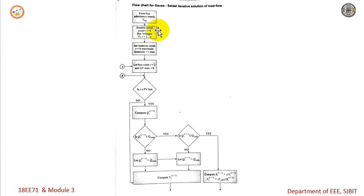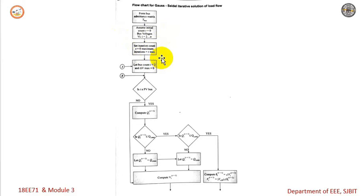Then we need to assume the initial conditions. Set the iteration count r equal to 0 for the 0th iteration. Assume the bus voltages and set the maximum number of iterations as r max. The bus count starts at 2 because the first bus is always the slack bus, so the voltage magnitude and angle delta at bus 1 are always known.